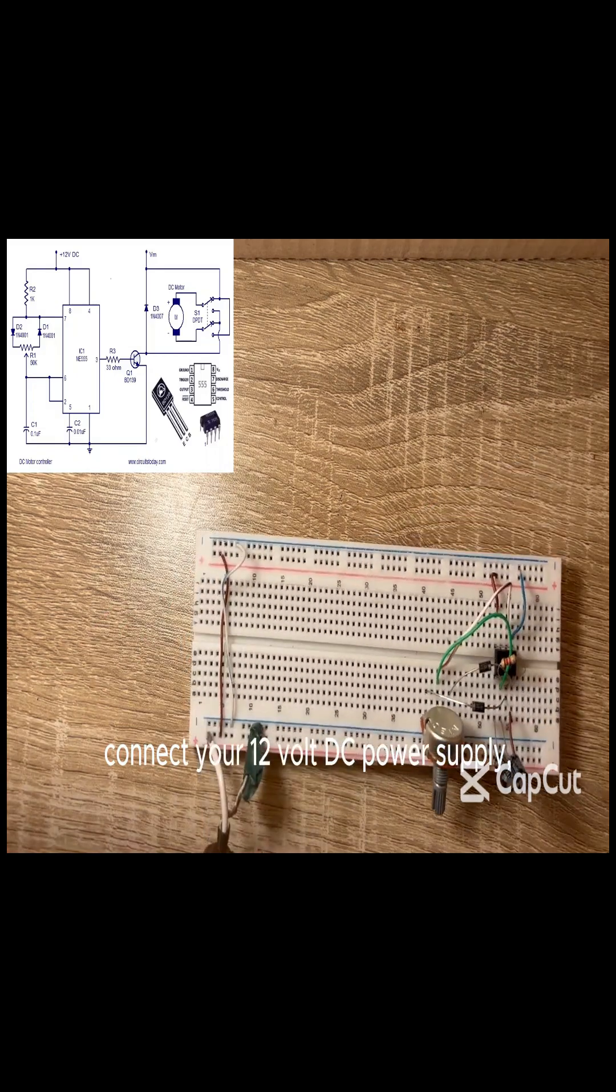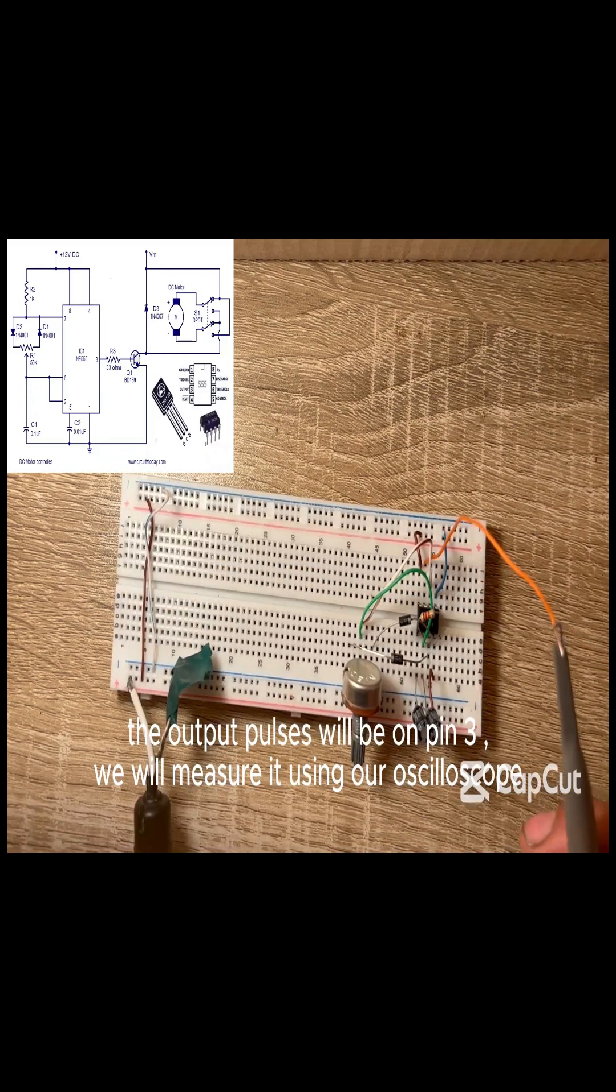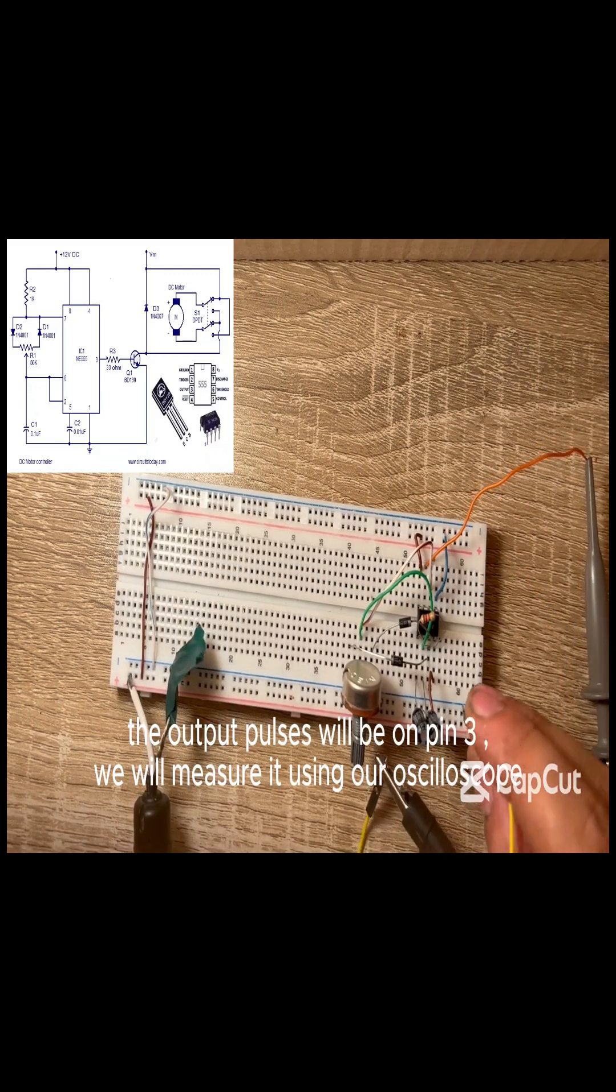Connect your 12 volt DC power supply. The output pulses will be on pin 3. We will measure it using our oscilloscope. Let's try.